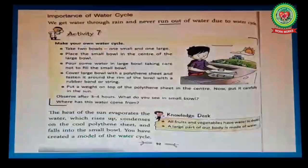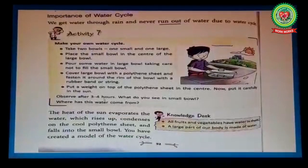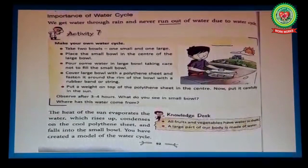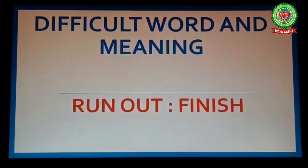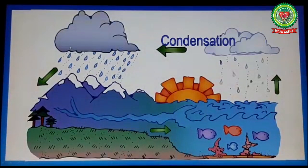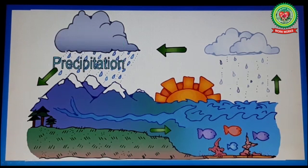Now let's discuss the next paragraph — the importance of the water cycle. We get water through rain and never run out of water due to the water cycle. Underline the phrase 'run out' and write its meaning: finish. The importance of the water cycle is that it refills our water bodies and it maintains the level of ground water.